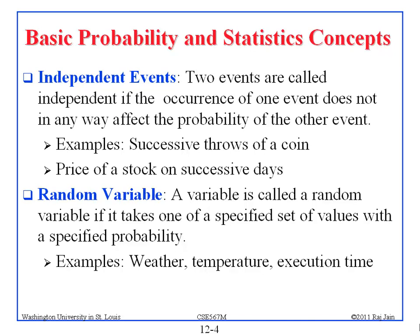Random variable. A variable is called random variable if it takes one of a specified set of values with a specified probability. So, it can take many values. And for each value, we can specify a probability. For example, temperature. What is the temperature right now?